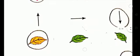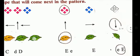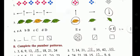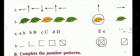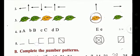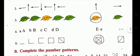Third, you can see leaves are given: two green, then one orange, two green, then one orange — that pattern will continue.